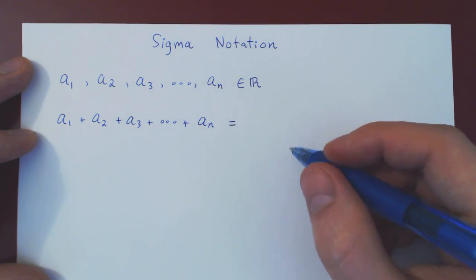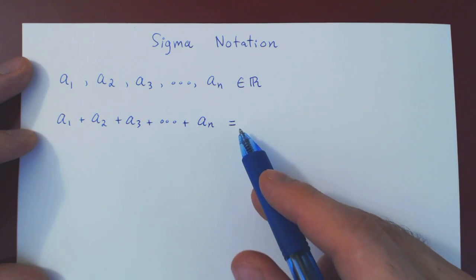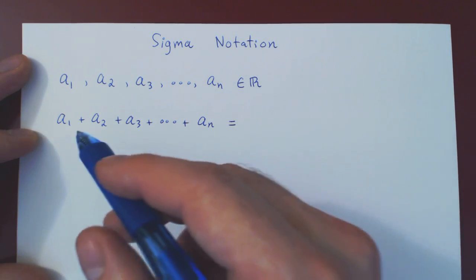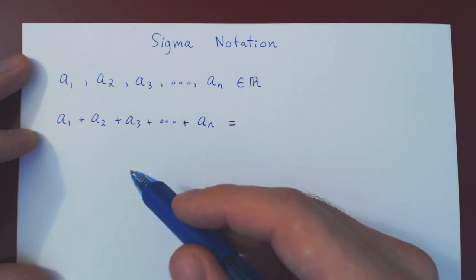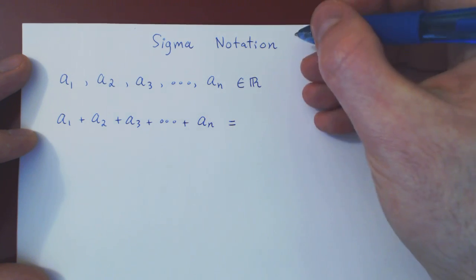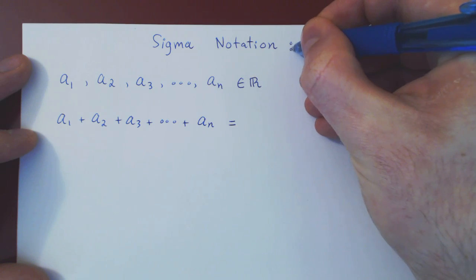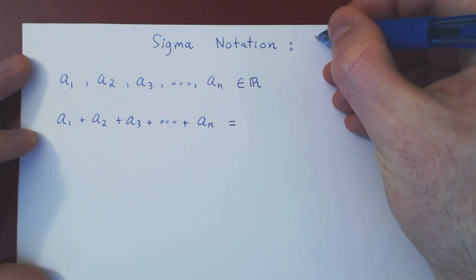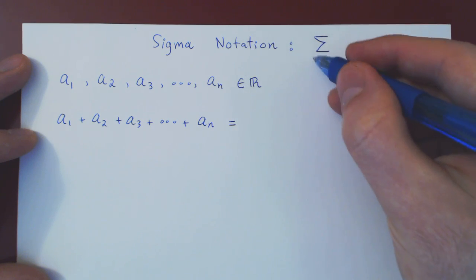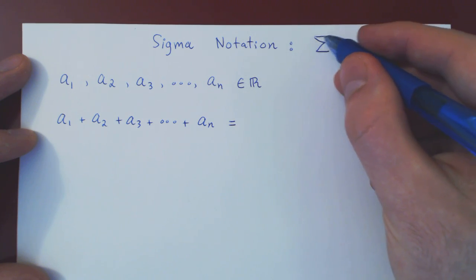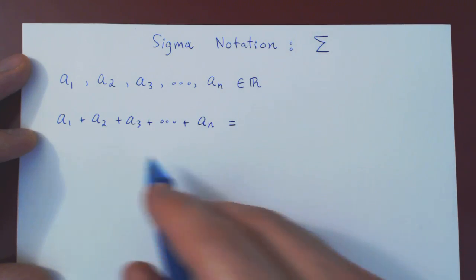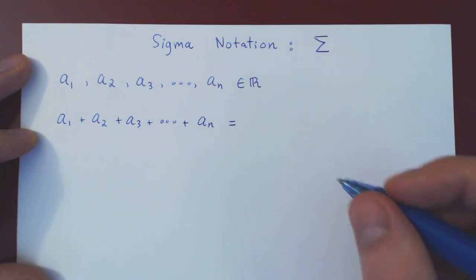There are a few parts to this notation. The first is: what kind of letter could we use to represent a sum? The idea is we'll use an S, but we'll use a Greek uppercase S called sigma. This is a Greek letter — an uppercase S — and it stands for summation.